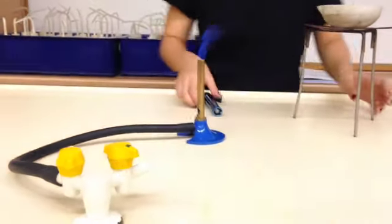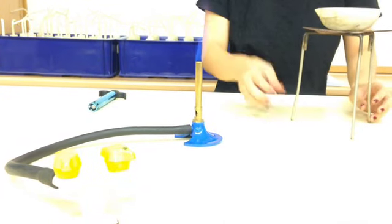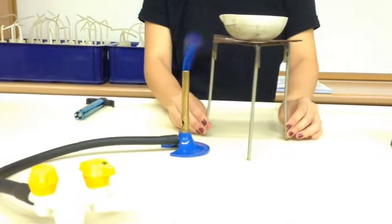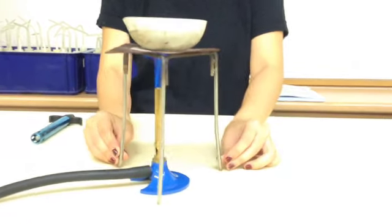You can roughly gauge how big the flame is from the sound or the size of the flame. Now with this, we're going to put the tripod stand with the evaporating dish on top and heat it.